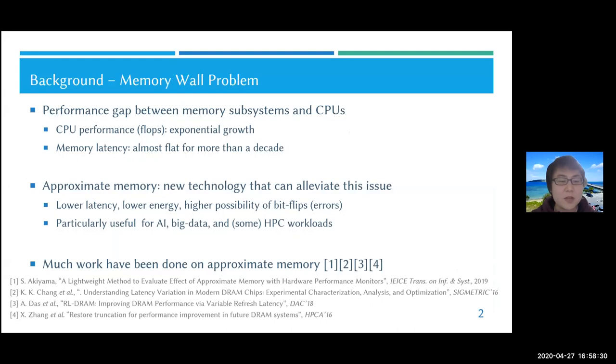So here comes approximate memory. This is a new technology that can alleviate this issue. This is one of the examples of approximation that was also in the keynote. And this technology can achieve lower latency and lower energy with a cost of higher possibility of bit flips or errors.